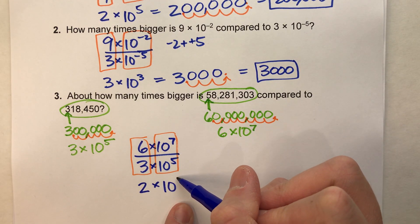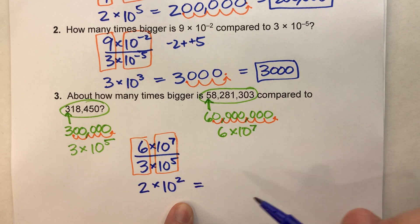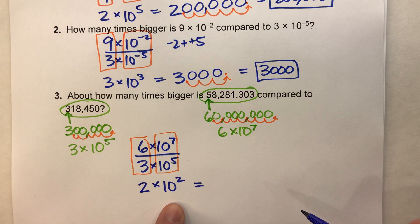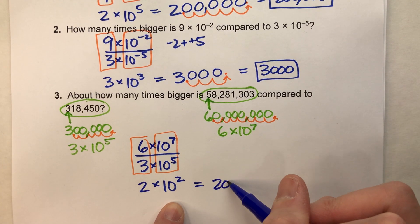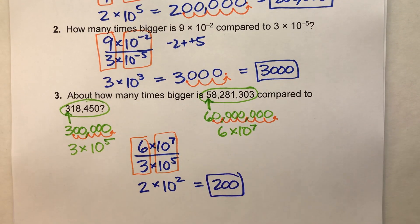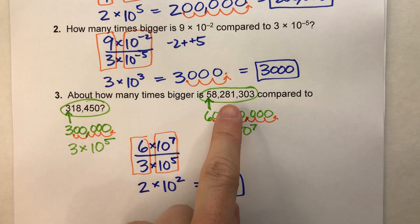Seven minus five, two. So we really have two times 10 to the second power, which is two times ten times ten, which is 200.